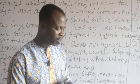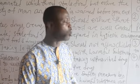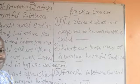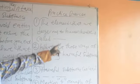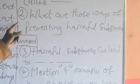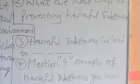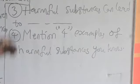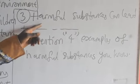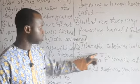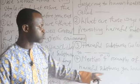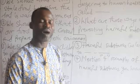Always ensure you have pen and paper to write these things down. Now for your exercise: Number one, the elements that are dangerous to human health are called blank — complete that statement. Number two, what are the ways of preventing harmful substances? Number three, harmful substances can lead to blank — complete that statement. Number four, mention four examples of harmful substances you know.